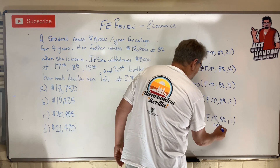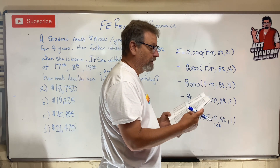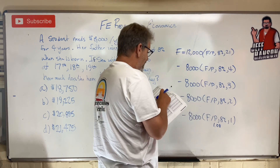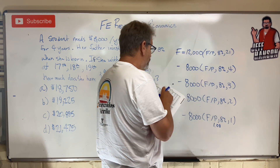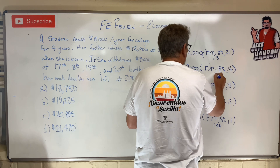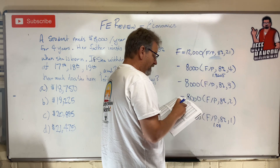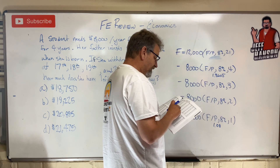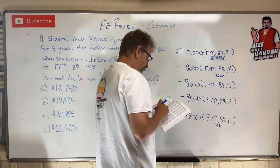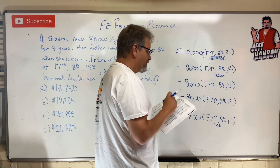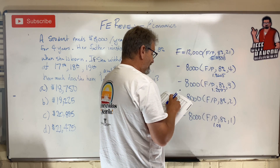This one is 1.08. The rest I'm going to use my 8% interest tables. F given P column — for 21 years, F given P is 5.0338. For four years, it's 1.3605. For three years, F given P is 1.2597. And for the last one, two years, it's 1.1664.